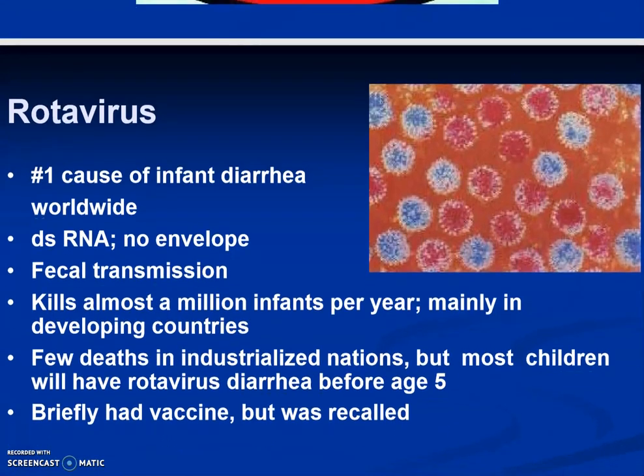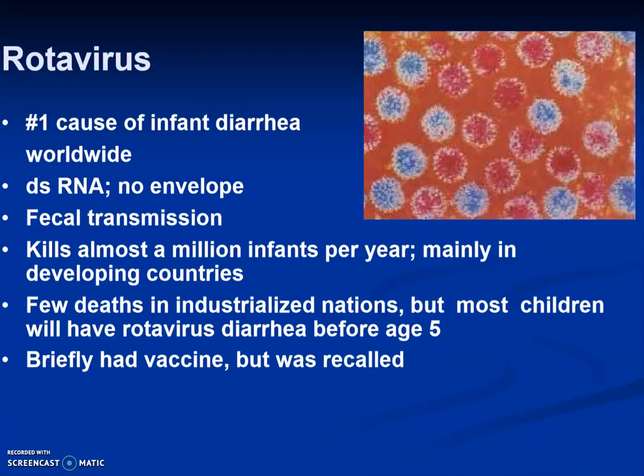The last pathogen is Rotavirus, which is really widespread and is the number one cause of infant diarrhea worldwide. It has double-stranded RNA and no envelope. Transmission is through the fecal route, and it kills almost a million infants per year, mainly in developing countries. Most children have rotavirus diarrhea before age 5. A vaccine existed but was recalled.